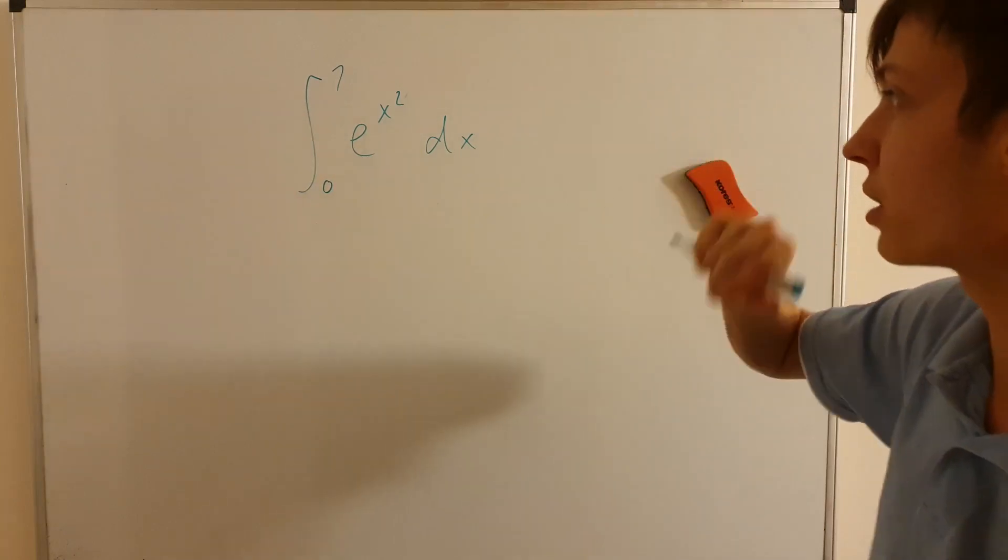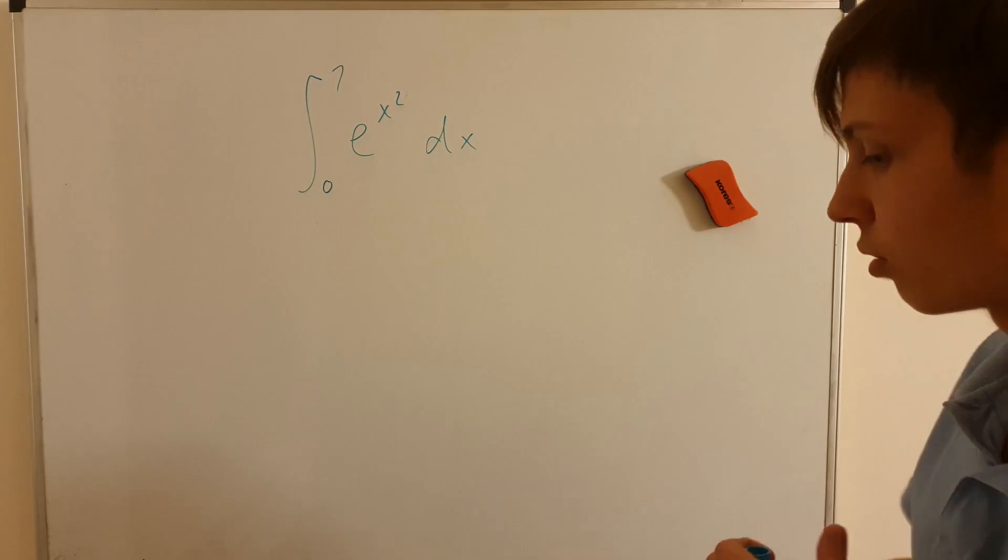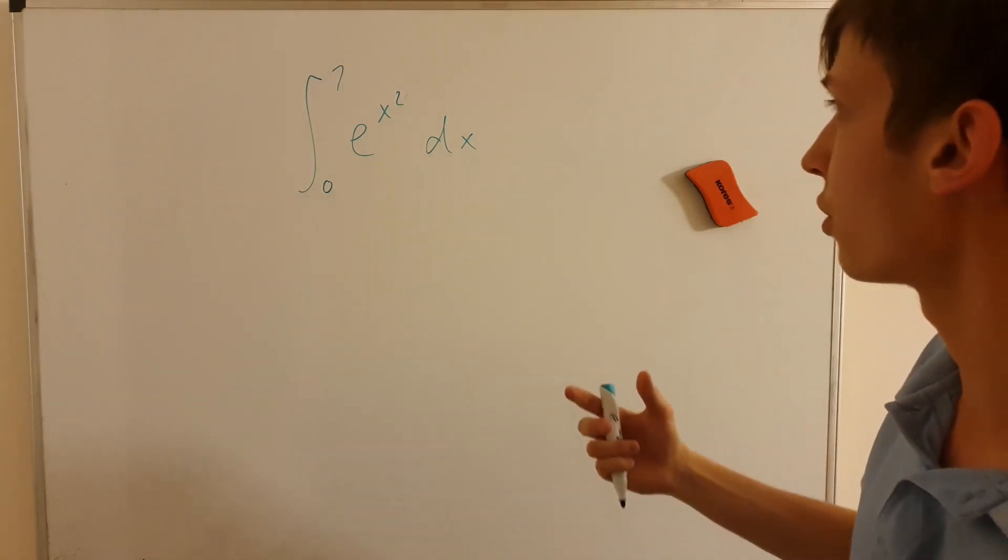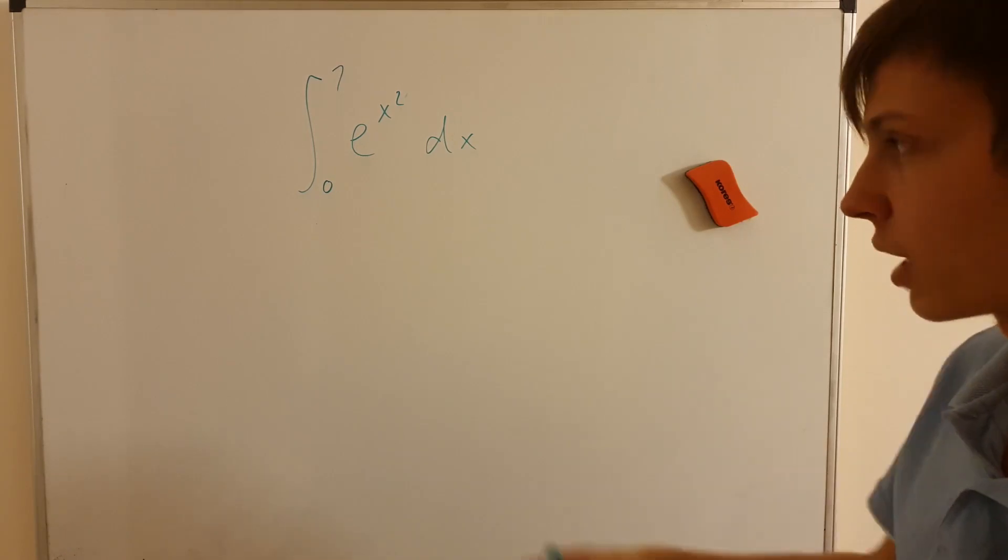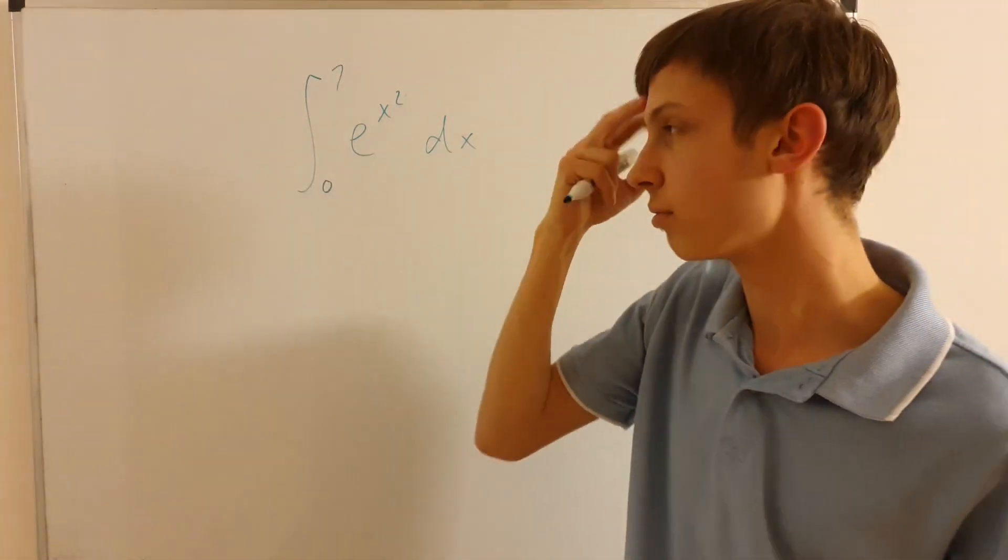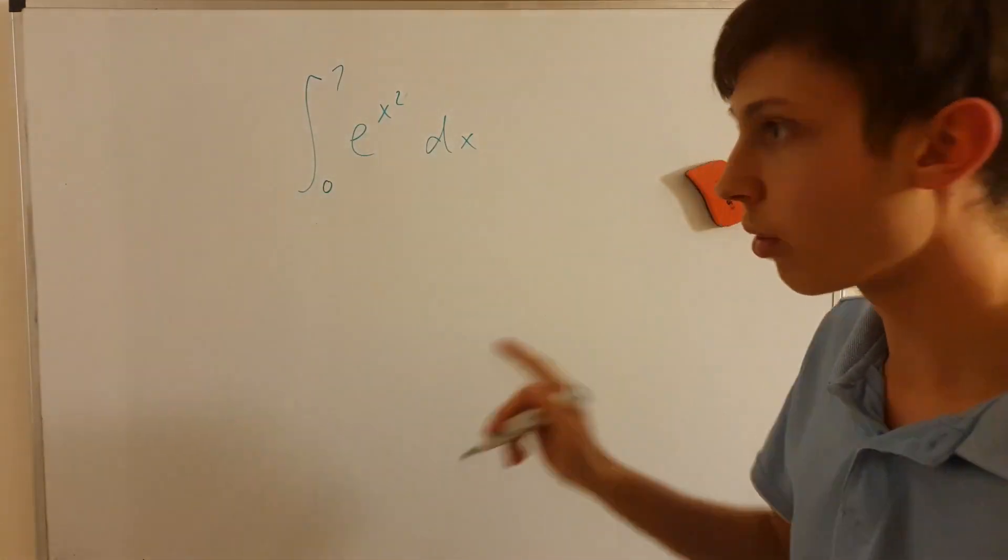So the point is, this cannot be integrated in the usual way, trying to apply, use out here, there's no one order, lower one degree, lower term to cancel out, and so on. Or e to the x does not apply here, because it's e to the x to the second, right? So the point is, one can use Taylor series and replace this.